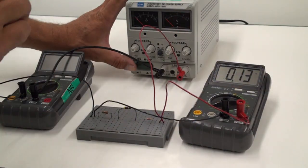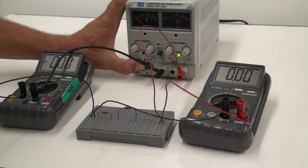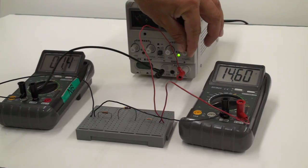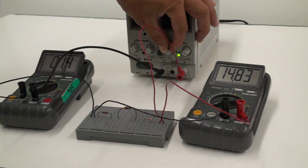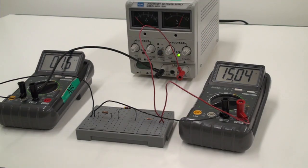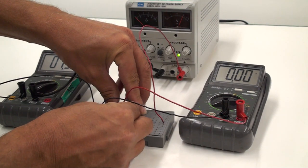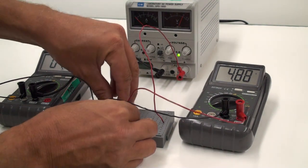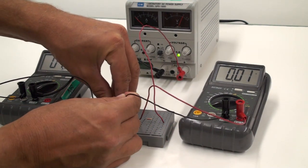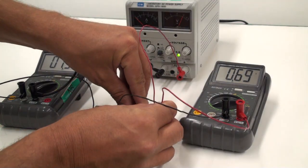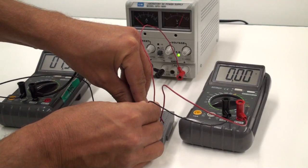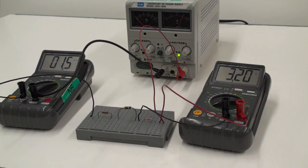The current through this circuit is read once and should not change just because the voltmeter is moved around. The voltmeter is placed across each of the three resistors in turn to read VCD, then VBC, and finally VAB. The sum of these three voltages should add up to the 15 volts total from the power supply.